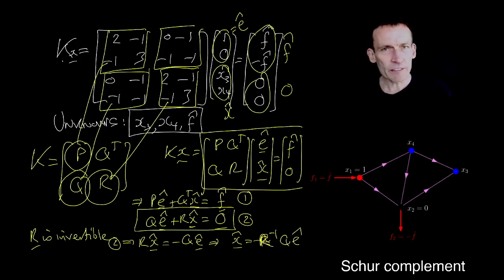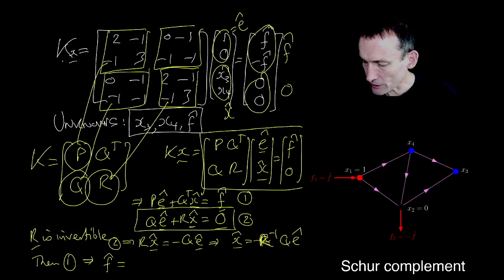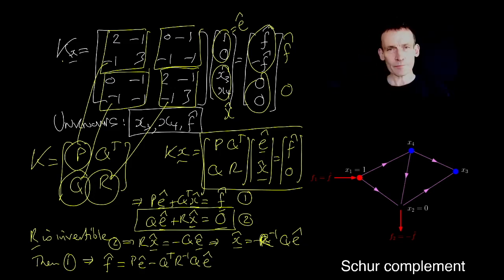I just take an R inverse of both sides of that equation and I get the X-hat is minus R-hat. But of course, then one implies that my F-hat, if I didn't know that, that was P E-hat minus Q transpose R inverse Q E-hat.